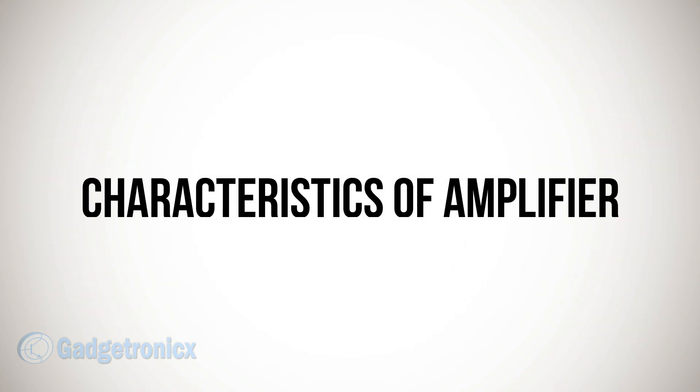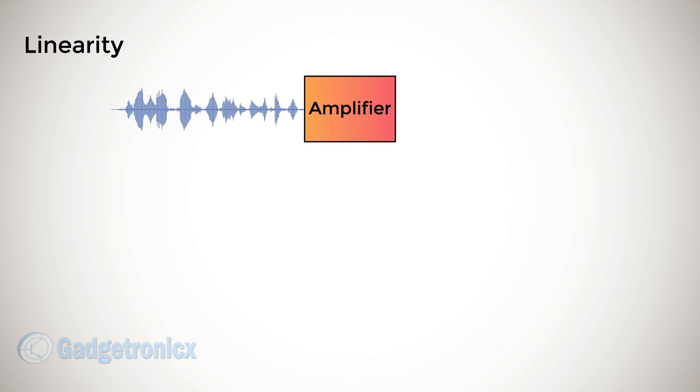Now, let's take a look at four important characteristics of an amplifier. Amplifier Linearity: The property where amplifier does not alter the shape of a signal and produces only the amplified version of original signal. This majorly determines the quality of output signal.